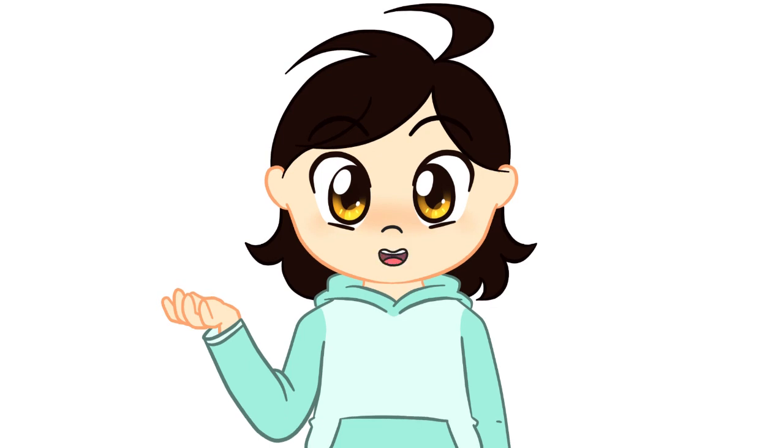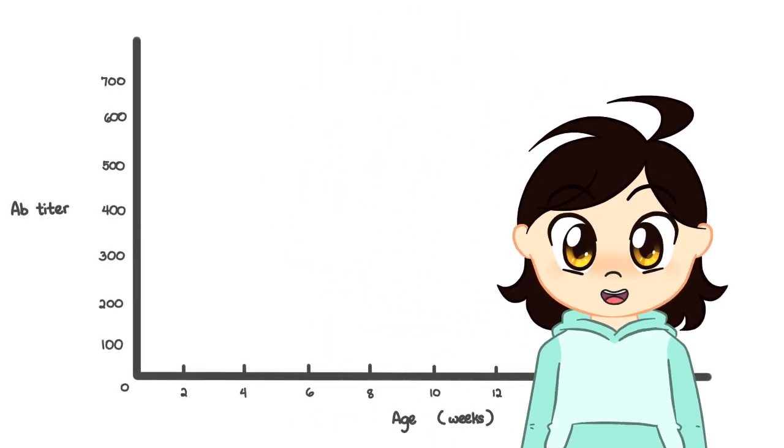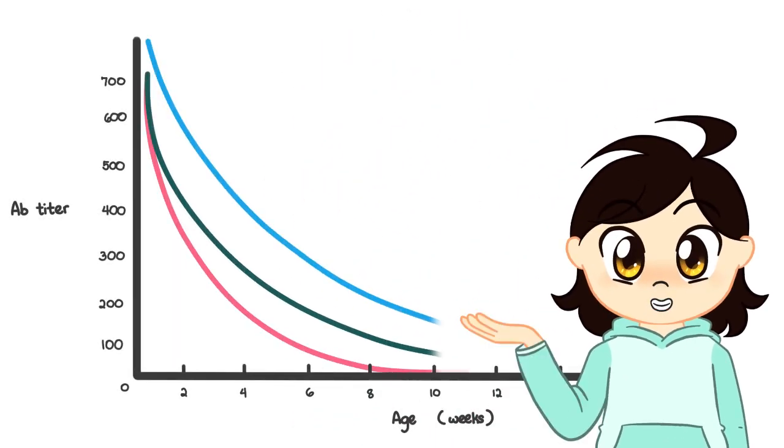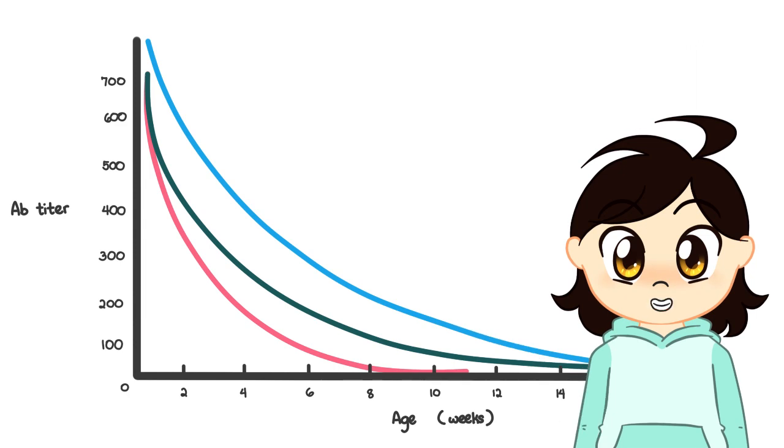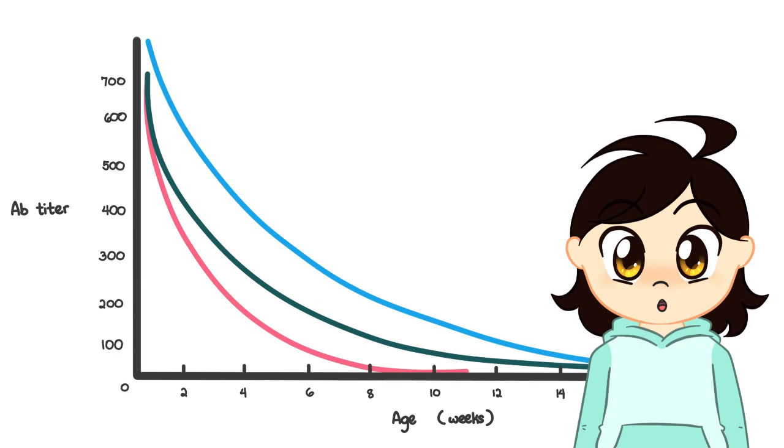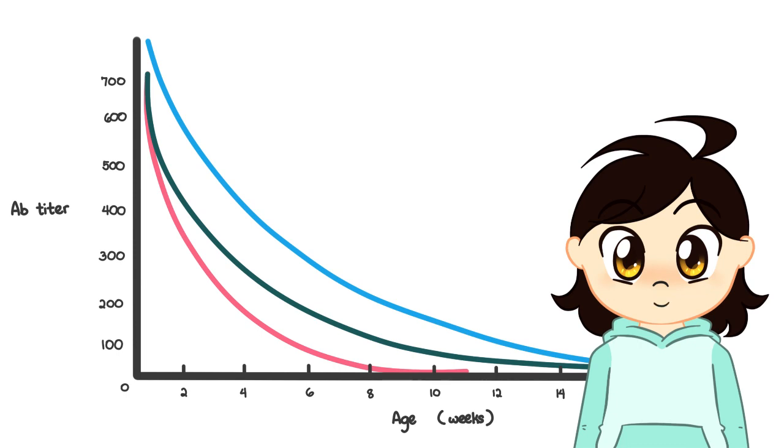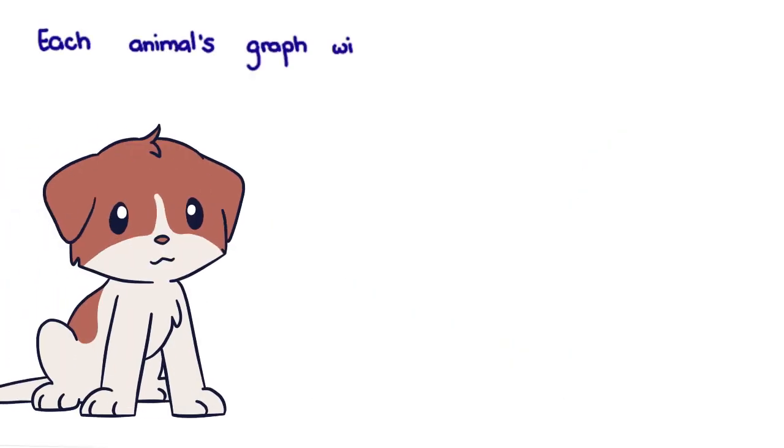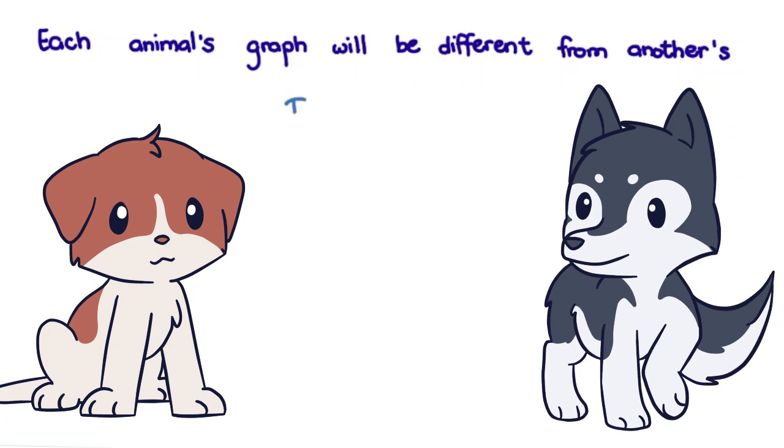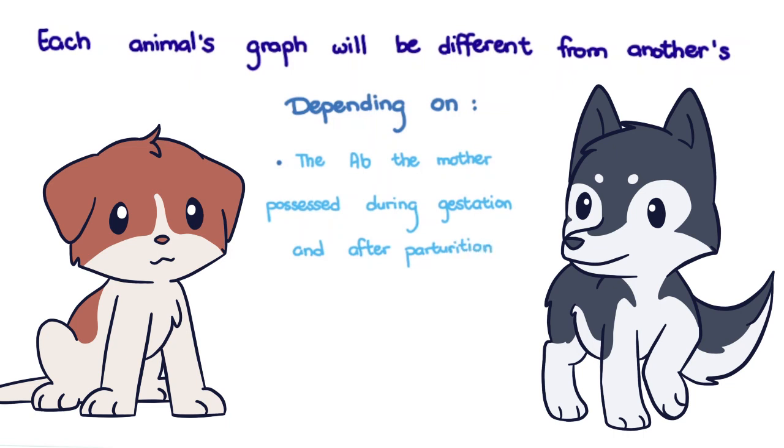Of course, this graph is only an example. In reality, there are different antibodies for different diseases. The antibody levels against canine distemper, for example, may fall below the protective levels before those of canine parvovirus. And each animal's graph will be different from another's, depending on factors like the antibodies the mother possessed during gestation and after parturition, and whether the antibodies were successfully transferred to the offspring.